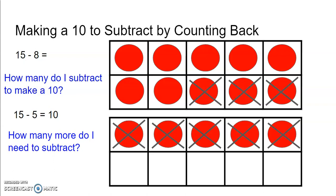I can count how many red circles are left, and that will be my difference or my answer. So 1, 2, 3, 4, 5, 6, 7. 10 minus 3 is 7. So now I know that 15 minus 8 is 7.